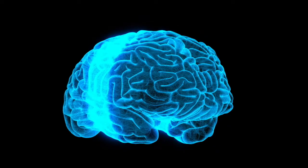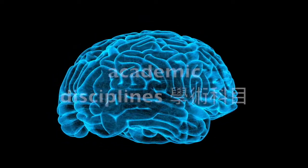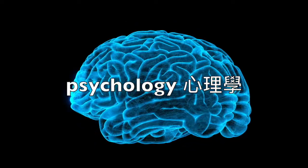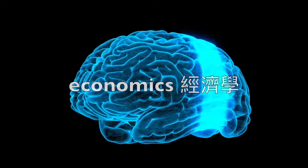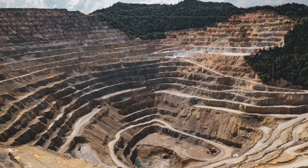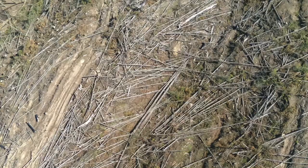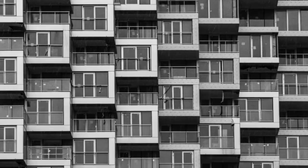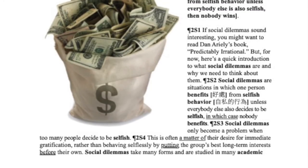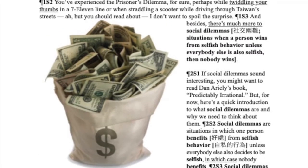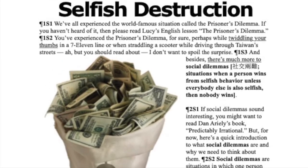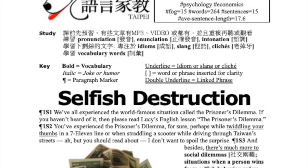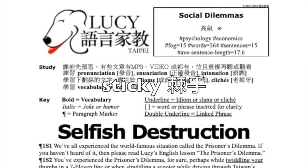Social dilemmas take many forms and are studied in many academic disciplines, such as psychology, economics, and political science. They help us better understand situations including resource depletion, low voter turnout, and overpopulation. Lucy and I hope that today's English lesson helps you prepare, because sooner or later you'll come face-to-face with one of life's real-world social dilemmas, and you can bet it'll be sticky.